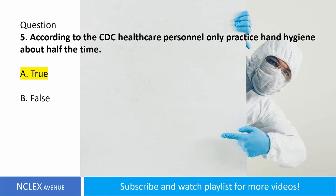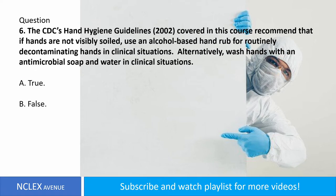Question number six. The CDC's Hand Hygiene Guidelines 2002, covered in this course, recommend that if hands are not visibly soiled, use an alcohol-based hand rub for routinely decontaminating hands in clinical situations. Alternatively, wash hands with an antimicrobial soap and water in clinical situations. A. True. B. False. Answer: letter A. True.